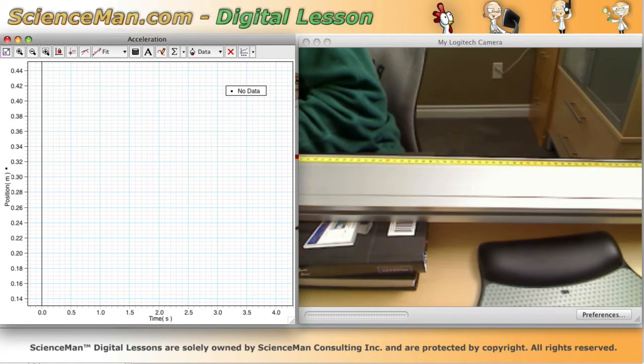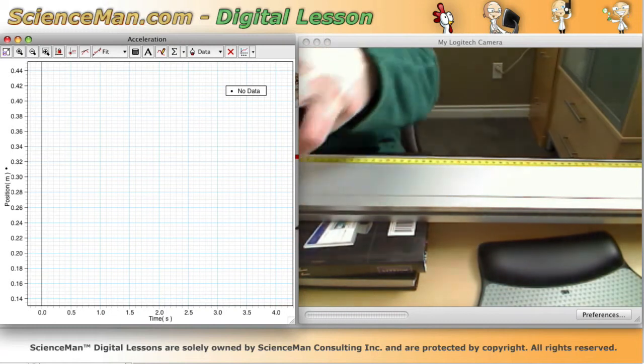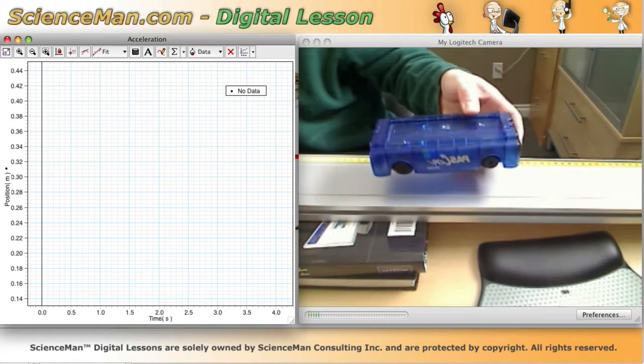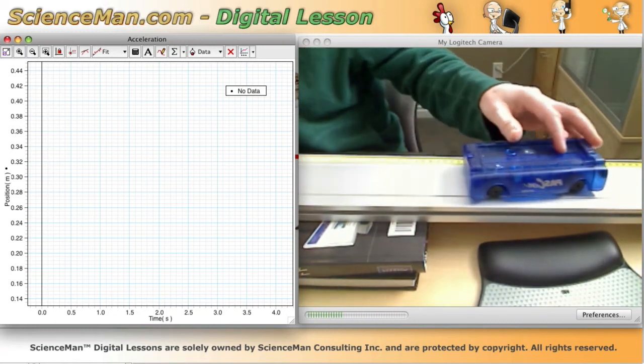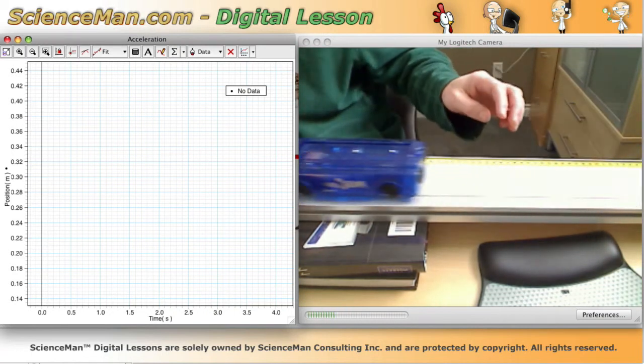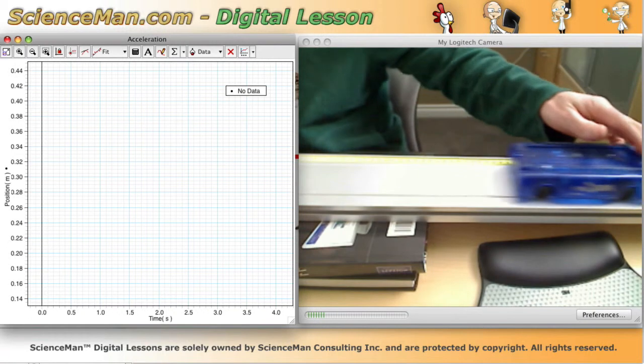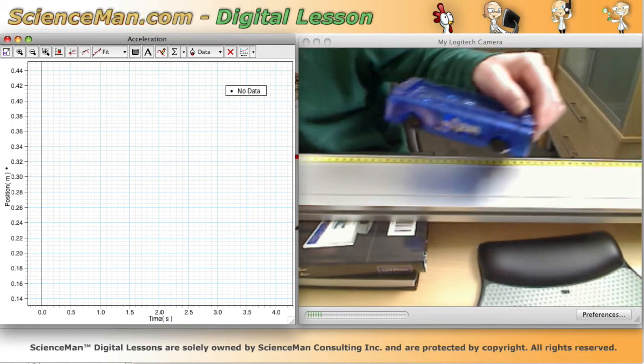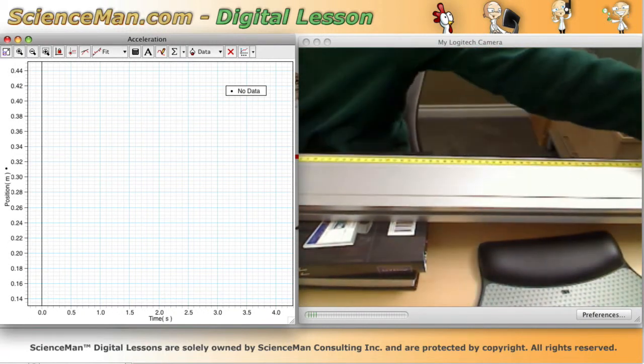Well here I have a position time graph on the left and what I'm going to do is I'm going to take this cart and I'm going to move this cart in a motion that goes up this ramp and then it's going to come back down.